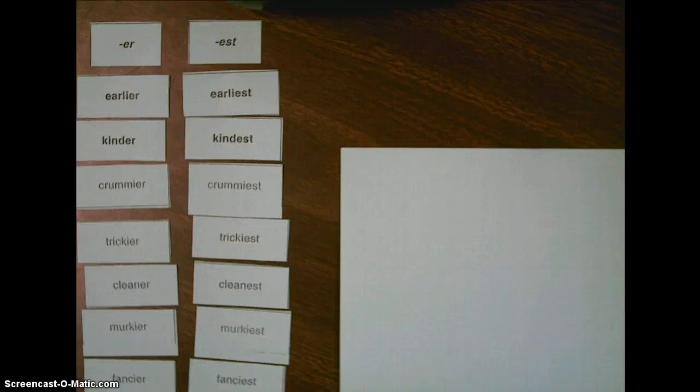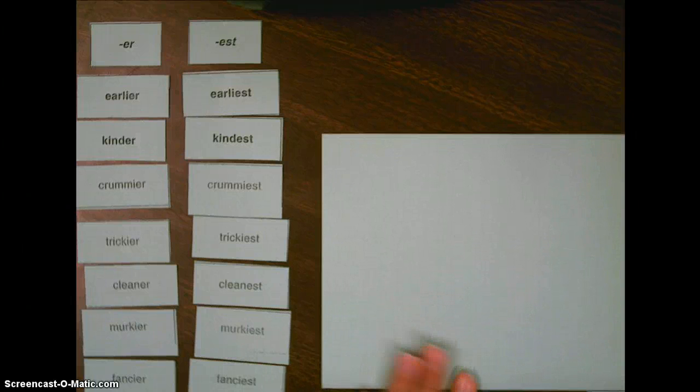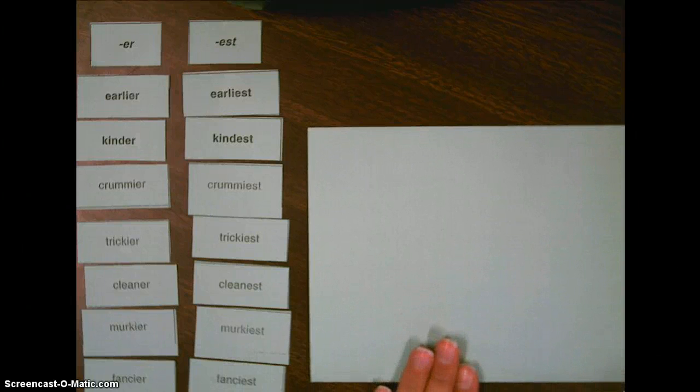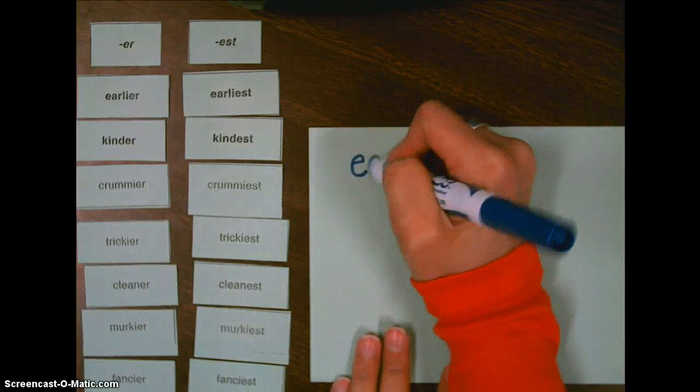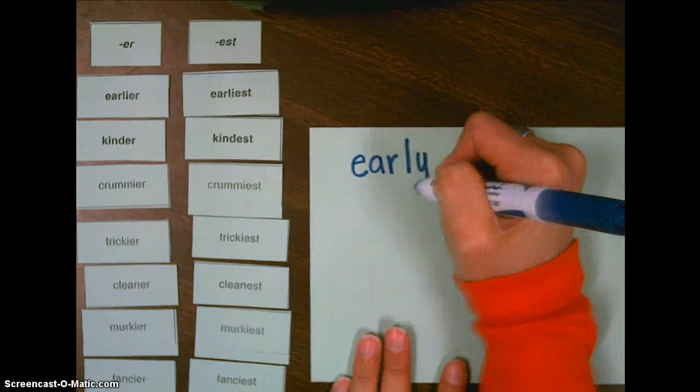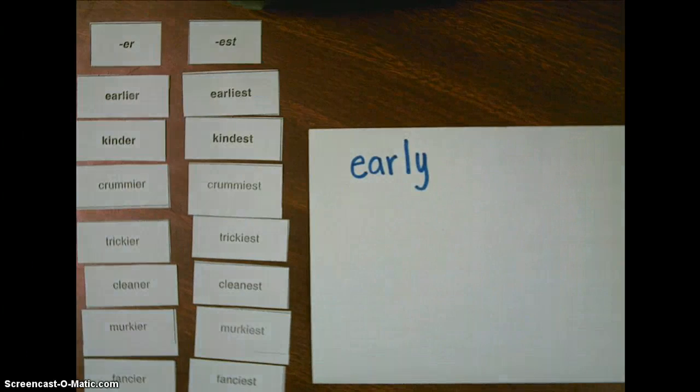Now, you should have all of your words sorted as pairs into the categories er or est, and we're going to take a closer look at these words. Let's look at the first words at the top of my sort, earlier and earliest. What is the base word of earlier and earliest? The base word is early, and how do we spell early? E-A-R-L-Y. Now, look at earlier and earliest in your sort. Do we see that base word spelled the same? It's different, isn't it? I don't see a Y in either of those words. In fact, instead of a Y, I see an I.